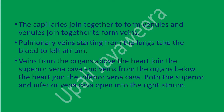The capillaries join together to form venules, and venules join together to form veins. Pulmonary veins starting from the lungs take blood to the left atrium. Veins from the organs above the heart join the superior vena cava, and veins from the organs below the heart join the inferior vena cava. Both the superior and inferior vena cava open into the right atrium.